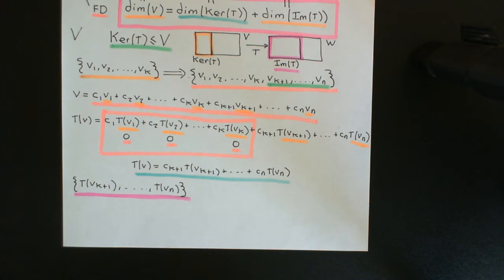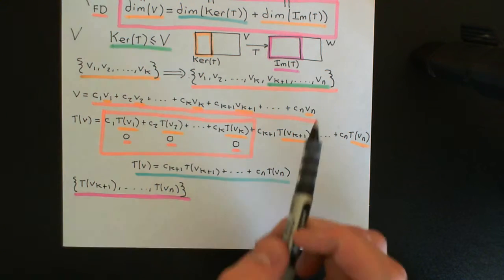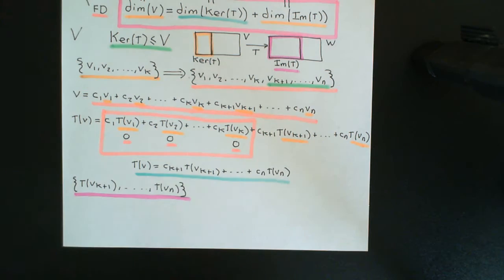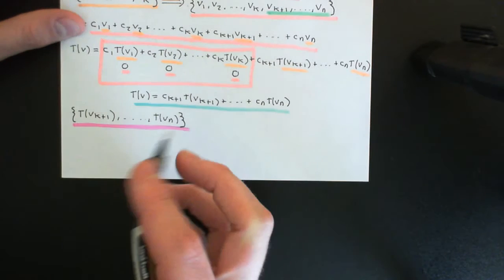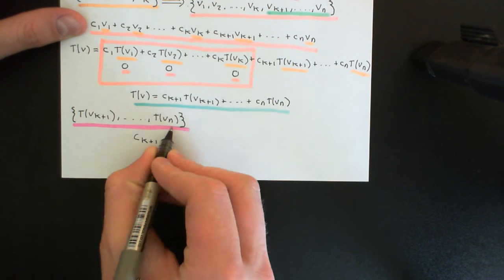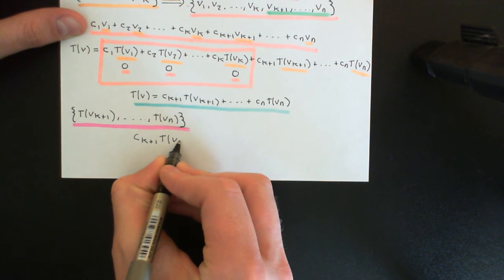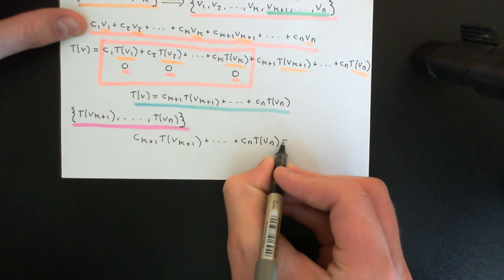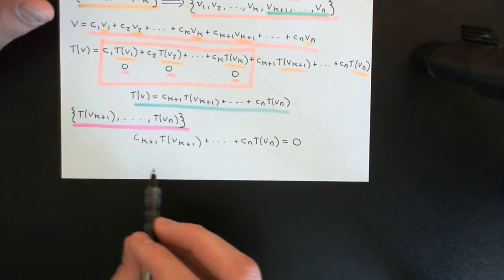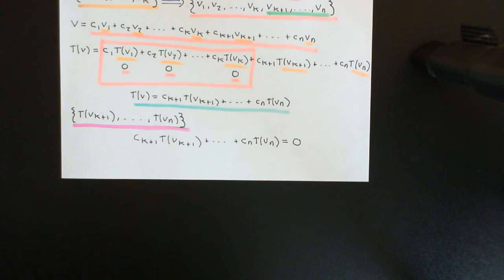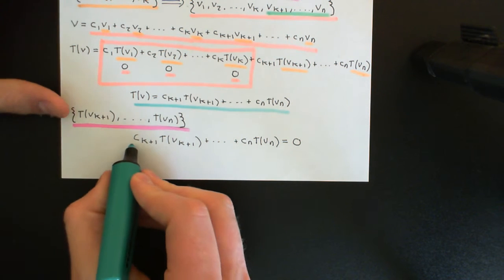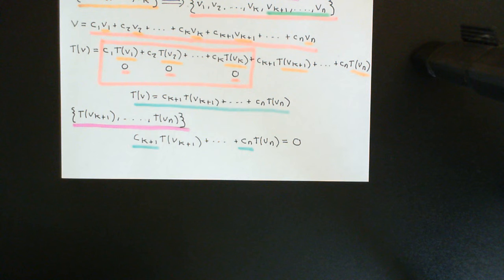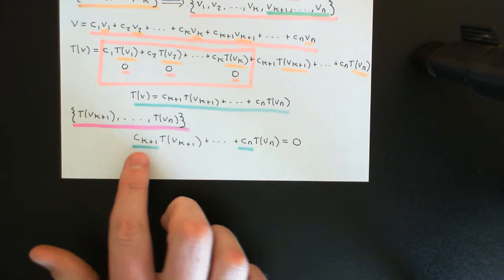The only thing left to prove is that this set of vectors is linearly independent — that the only linear combination of these vectors giving the zero vector in the image is the trivial one where all scalar coefficients are equal to zero. So I'll start with a linear combination: Ck+1 times T(vk+1) plus all the way up to Cn times T(vn) equal to the zero vector, and show that all of these scalars must be zero.